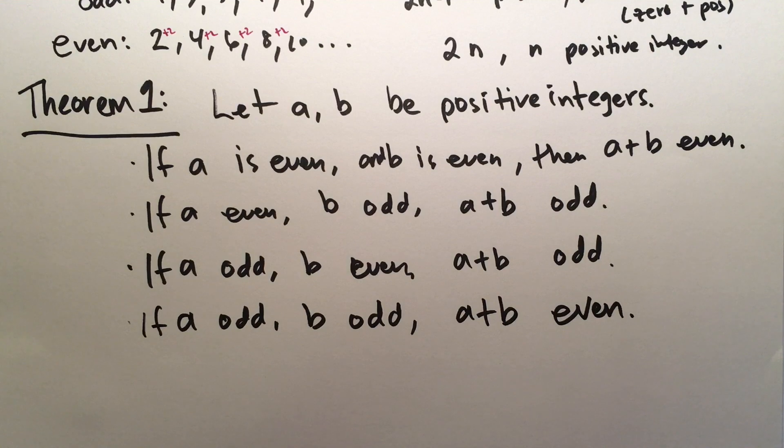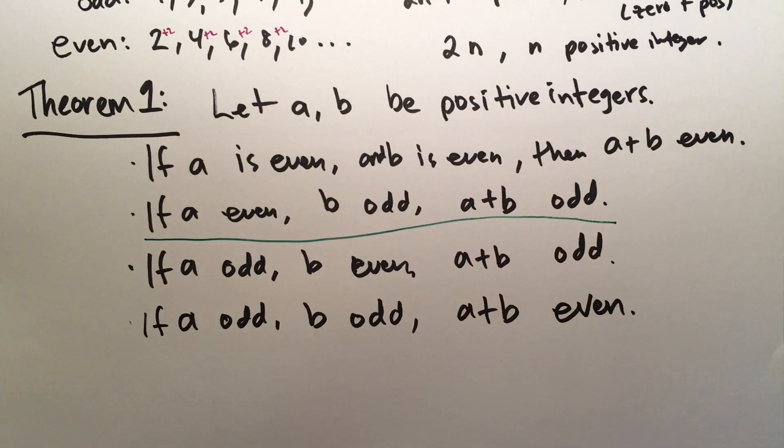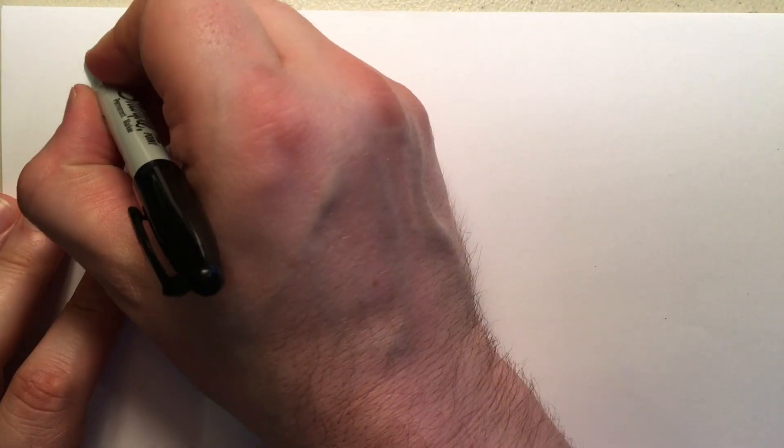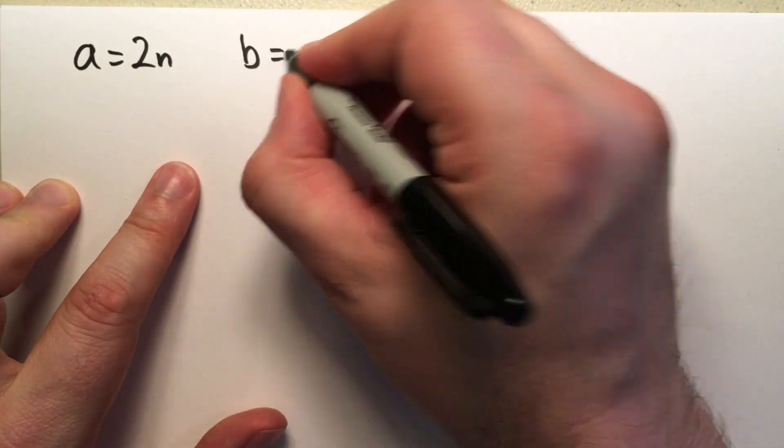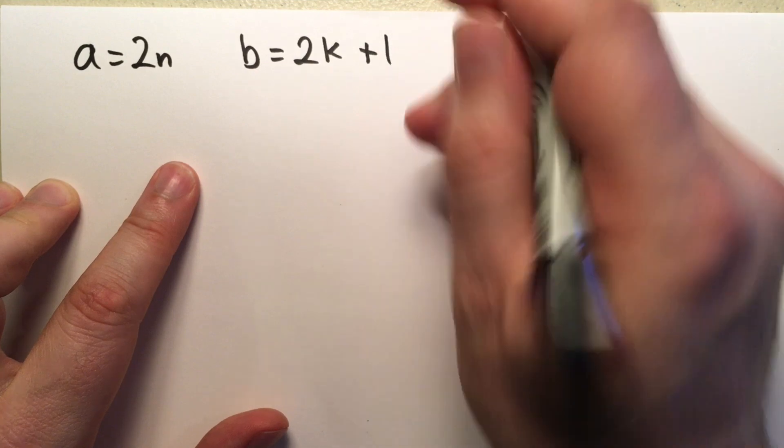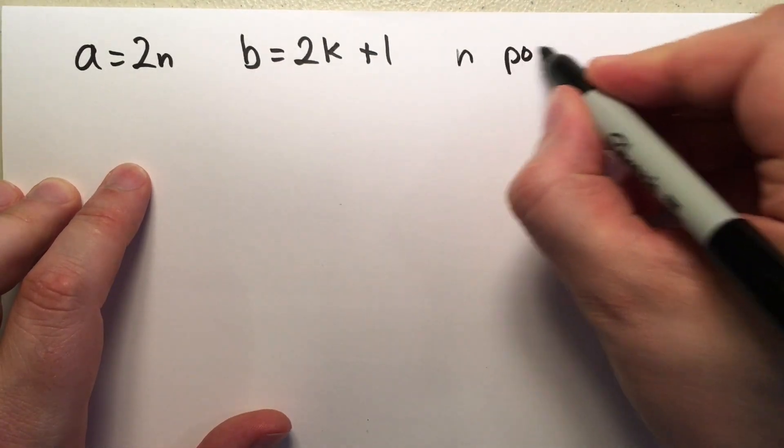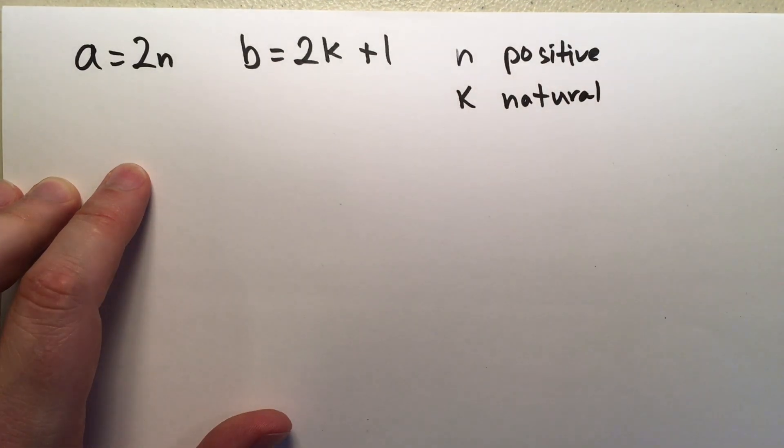Now, this theorem is given without proof. It's actually one of the exercises to solve the other three. We're going to focus on this second statement in this book. So, we assume for this second line that A is even, which means it's some number times 2. And B is odd, so it's another number times 2, plus 1. N is positive, but K is natural. It's 0 or positive.